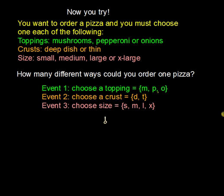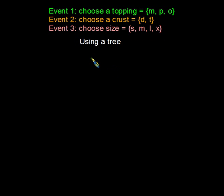The next step is to count the possible number of different ways you could order one pizza using a tree, then using an organized list, and ultimately the Fundamental Counting Principle. Make sure you write out the tree and the organized list — it's important to know how to make both. With this many possible outcomes, using a tree can get a little messy, but it's good practice.